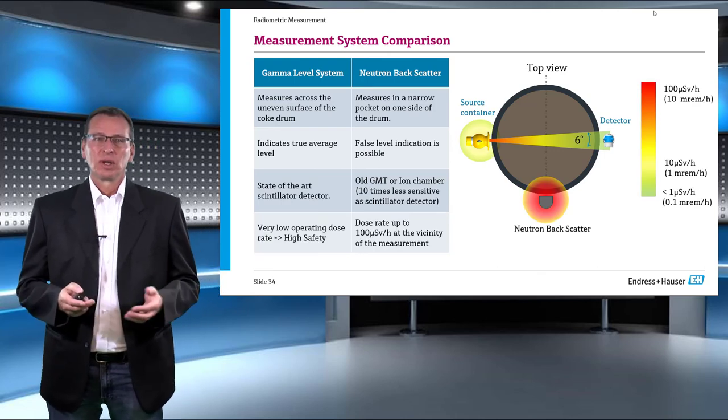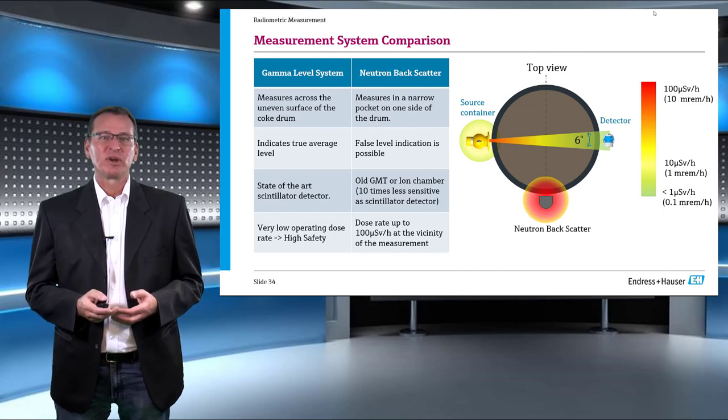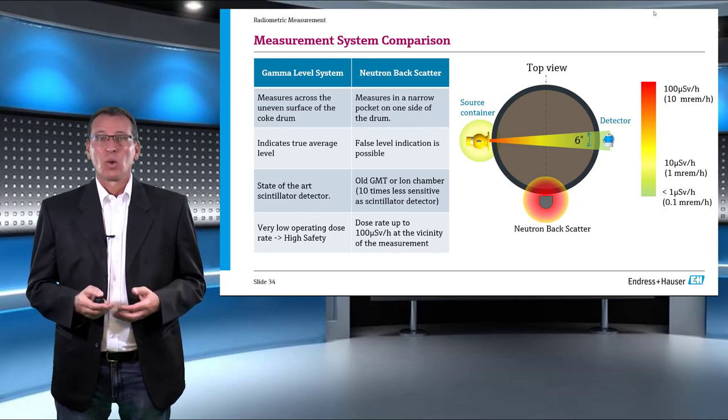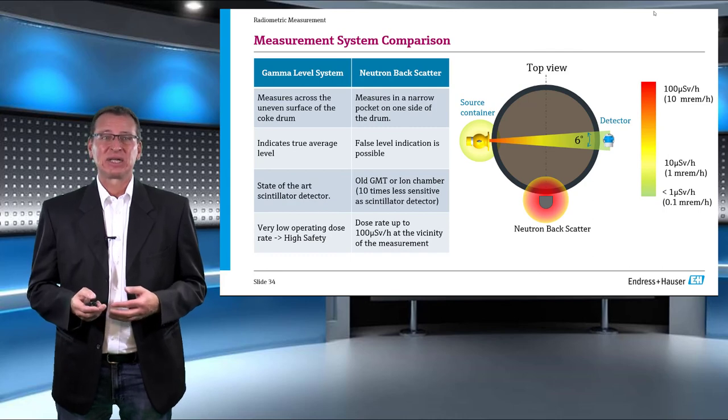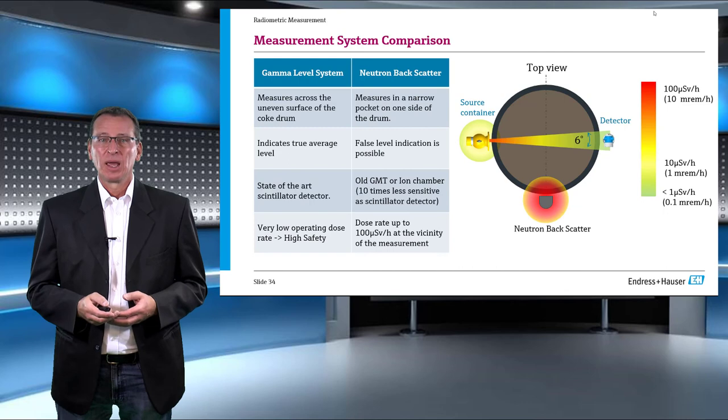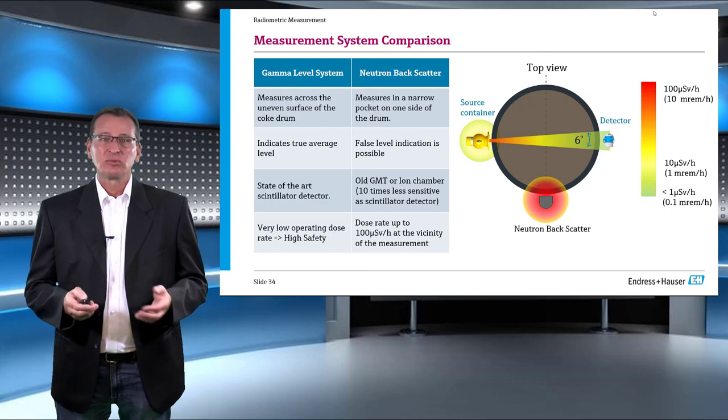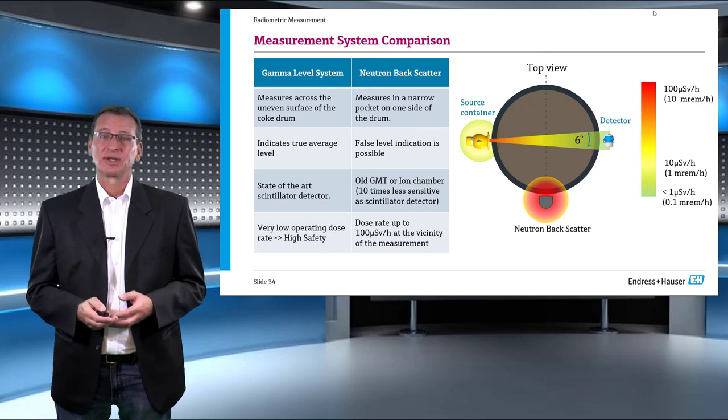This in turn brings a very significant difference on the dose rate around the measuring system. While a gamma system always maintains less than 10 microsieverts per hour on the exterior of the vessel, a neutron backscatterer can produce a dose rate as high as 100 microsieverts per hour in its vicinity. A comparative graph is shown here. And less dose rate always means more safety for our colleagues on site.